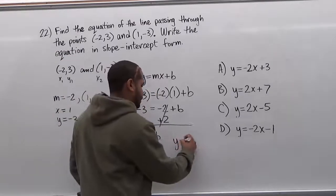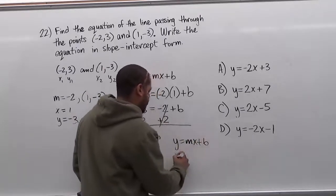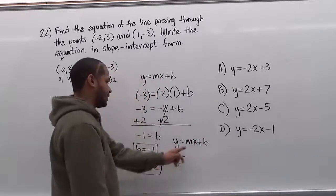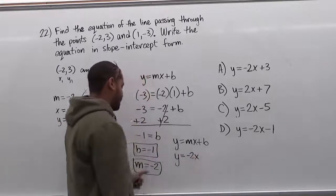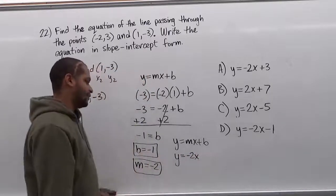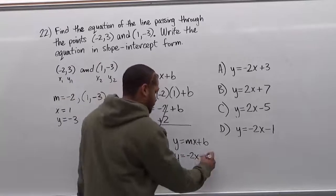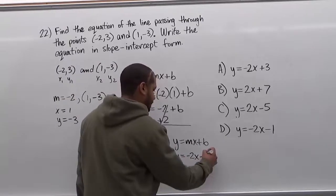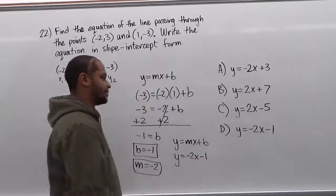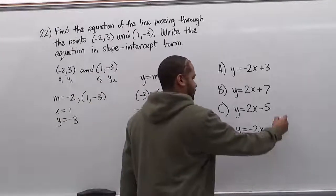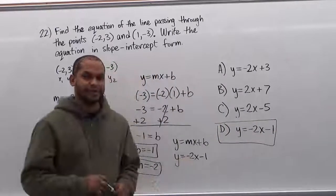Now using the slope-intercept equation y equals mx plus b, I insert my slope of negative 2 and my y-intercept of negative 1. So y equals negative 2x minus 1. That's the equation of the line — the same solution we got before using the point-slope form.